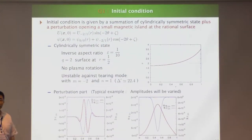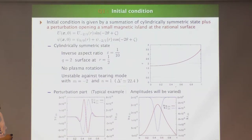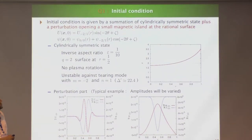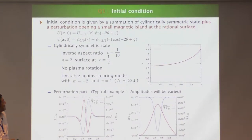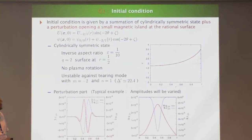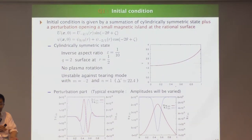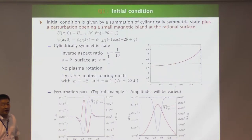The initial condition is given here: this is the initial vorticity and this is the initial magnetic flux function psi. For psi we have a cylindrically symmetric state — already an equilibrium — with a small-amplitude helical perturbation added. The radial structure of the initial perturbation is also shown.